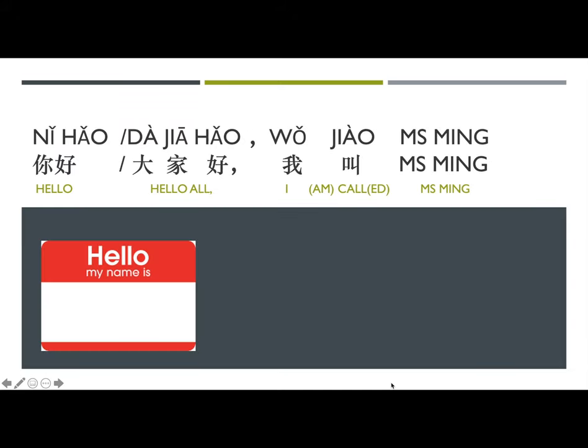你好 (nǐ hǎo). 你好 means hello — 你 means 'you' and 好 means 'good' or 'well,' so basically it means 'hey, I hope you're well.' 大家 (dàjiā) means 'all' or 'everyone,' so 大家好 means 'hello everyone' or 'hello all.'